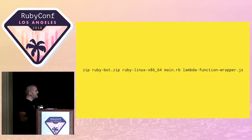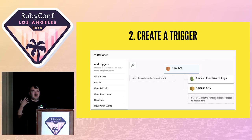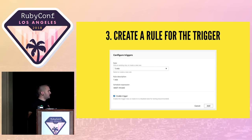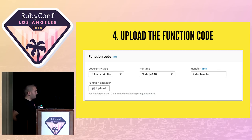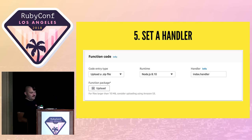There are five easy steps to configure your AWS Lambda serverless function: create a function and name it; select a runtime; select a trigger — we'll choose the CloudWatch Events scheduler that enables us to run our bot periodically; create a rule for the trigger, naming it and setting it to run every one or five minutes; upload the bot code as a zip file; and finally set a handler, which explicitly tells Lambda to look in your zip file, find a specific file, find the method in it, and invoke it. And that's it — we can now harvest the benefits of our Ruby bot.